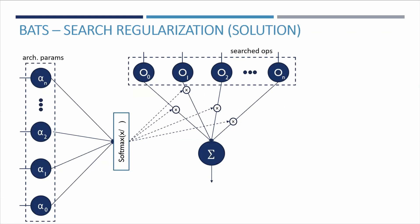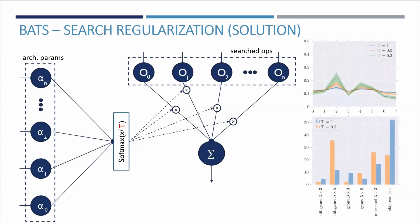To alleviate the degeneration issues and encourage the search procedure to be more discriminative, forcing it to make harder decisions, we propose to use a temperature factor lower than one. As we can see in the figure, it has the desirable effect of making the distribution of architecture parameters less uniform.